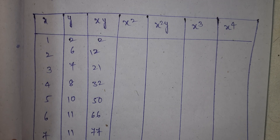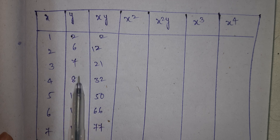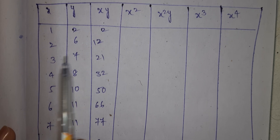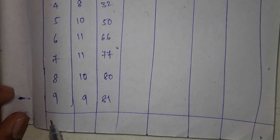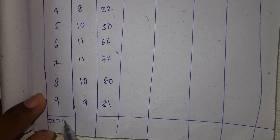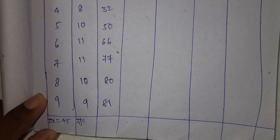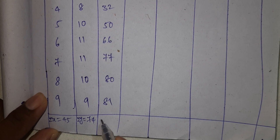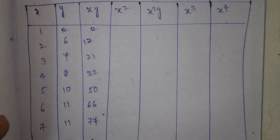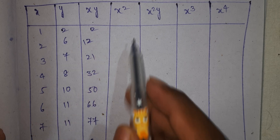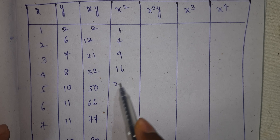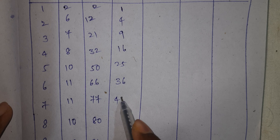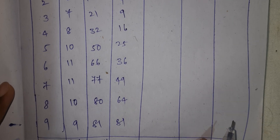See here. Now we have x and y. The values are: 1, 2; 2, 6; 3, 7; 4, 8; and so on. Summation x equals 45. Summation y equals 74. Summation xy equals 421. Next, x squared: 1, 4, 9, 16, 25, 36, 49, 64, 81.